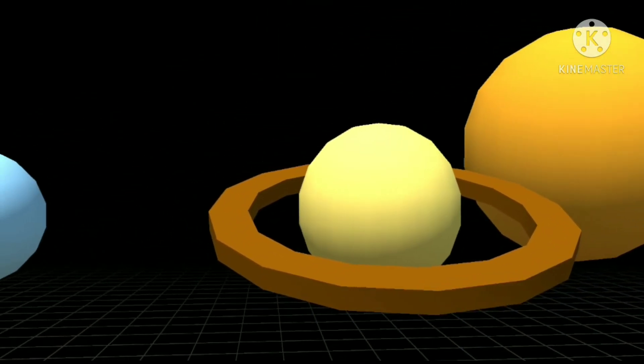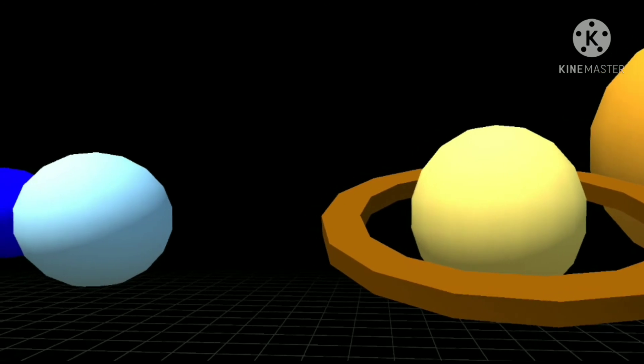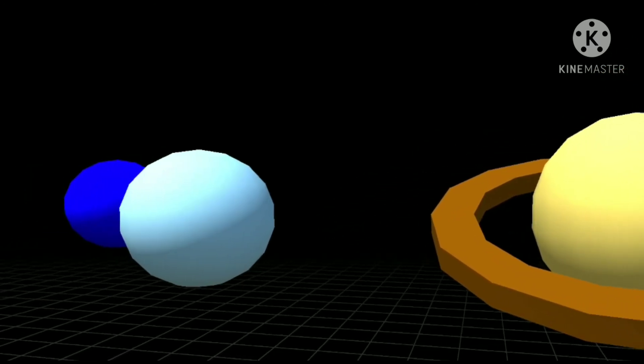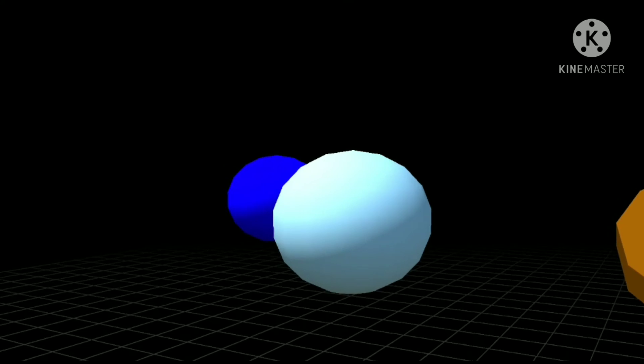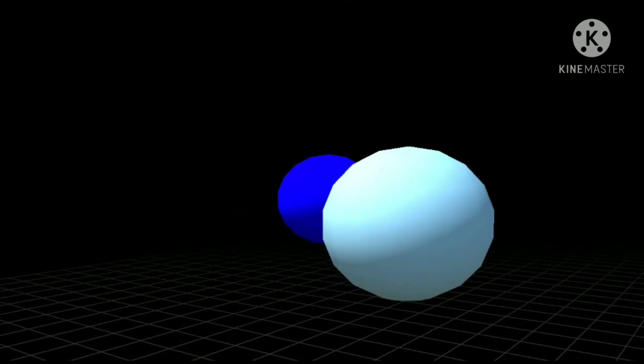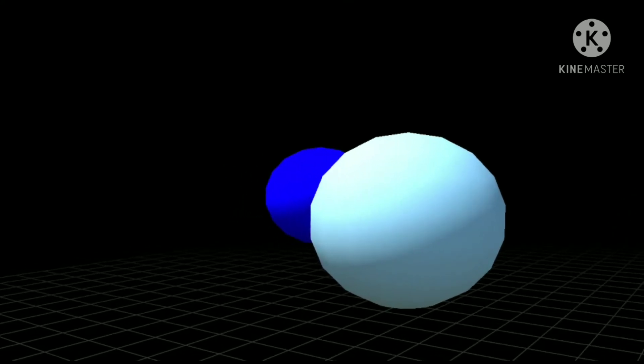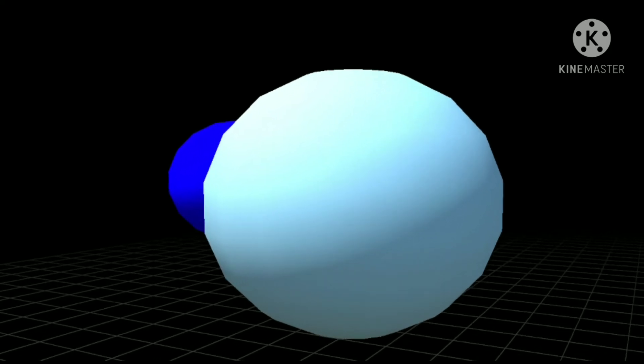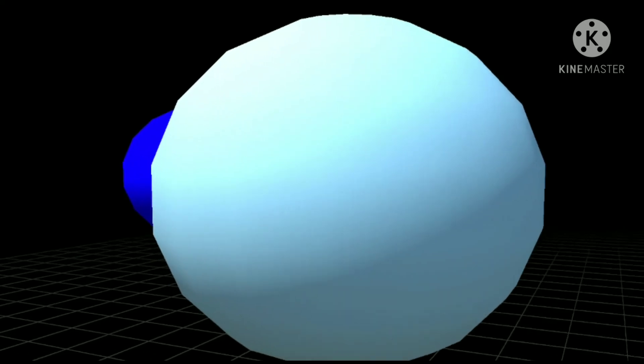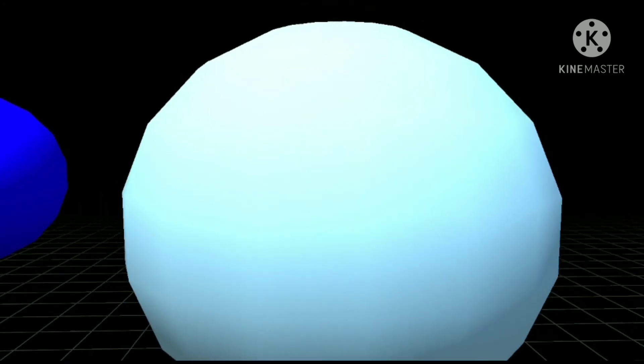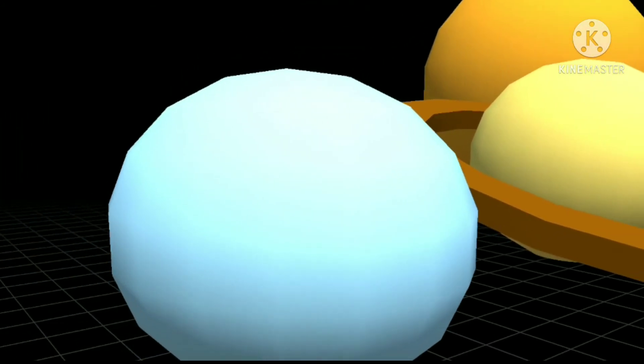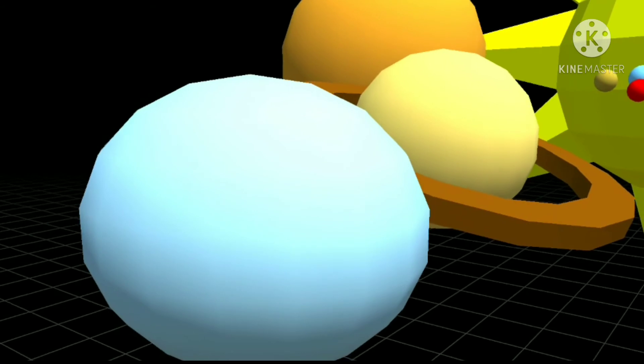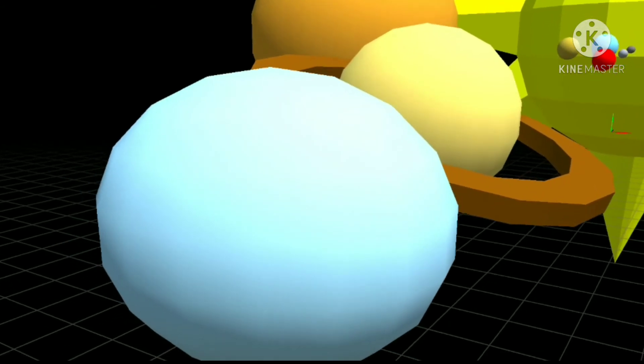Next planet is Uranus. You know what? The creator of this planet name is actually a 16-year-old gangsta. All I'm going to say is that it's tilted on its side. It's believed that a meteor-like object has crashed into Uranus to make it tilt. As expected, it's another gas giant. This is probably my favorite planet, just because of the name.